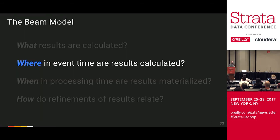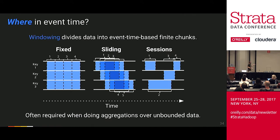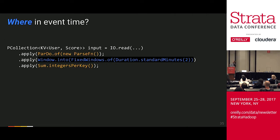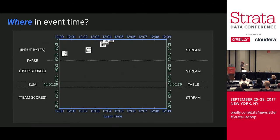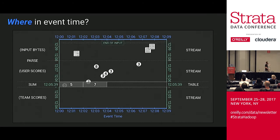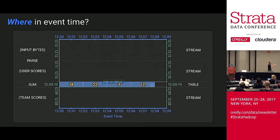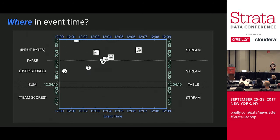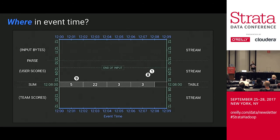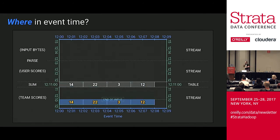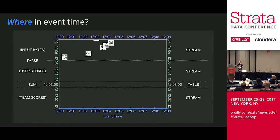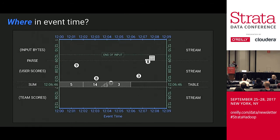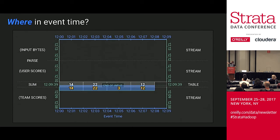The second question: where in event time are results calculated? This relates to windowing. There are three types: fixed, sliding, and sessions. In Beam, you add a windowing call specifying fixed windows of two-minute width. Looking at the animation again, this looks almost the same as before, except at the summation operation you're now summing over four separate windows each two minutes wide. Windowing has no effect on the parse stream-to-stream operation - where it shows up is in the grouping operation. Windowing is really a modification of grouping, like a secondary key. And this is still batch - we wait until the end of input to give a result.